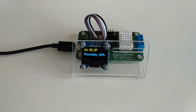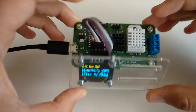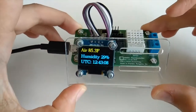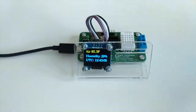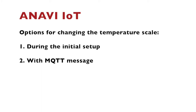As a maker of several entirely open source Internet of Things devices that are widely popular in the United States, I had to implement support for both Celsius and Fahrenheit in the software. In this video tutorial, I'll show you how to set the temperature scale of the ANAVI Thermometer and ANAVI Gas Detector using the default open source firmware, which is available on GitHub.